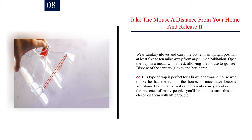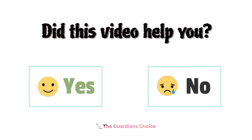Number 8: Take the mouse a distance from your home and release it. Wear sanitary gloves and carry the bottle in an upright position at least 5 to 10 miles away from any human habitation. Open the trap in a meadow or forest, allowing the mouse to go free. Dispose of the sanitary gloves and bottle trap. This type of trap is perfect for a brave or arrogant mouse who thinks he has the run of the house. If mice have become accustomed to human activity and brazenly scurry about even in the presence of many people, you'll be able to snap this trap closed on them with little trouble.